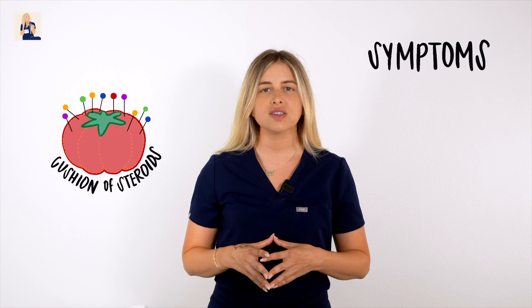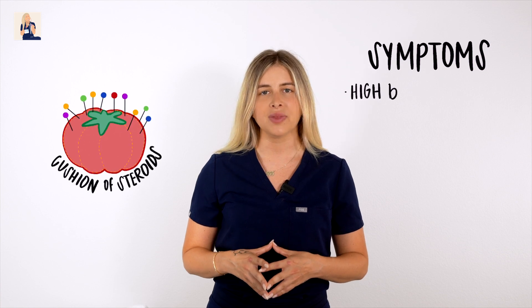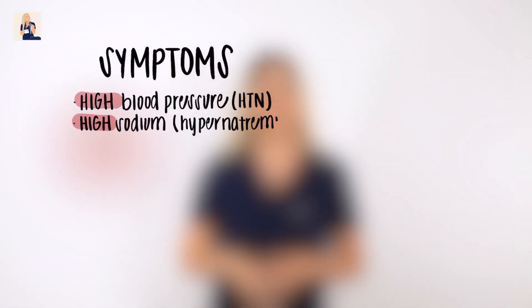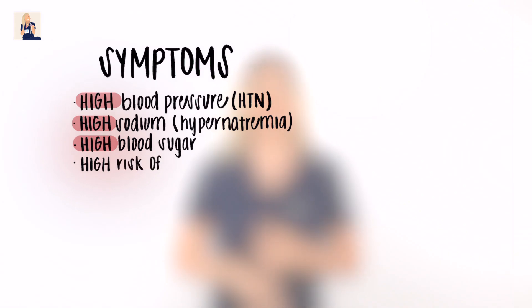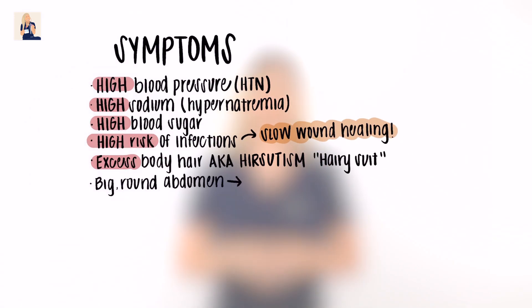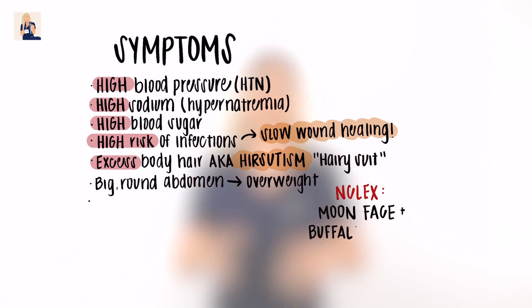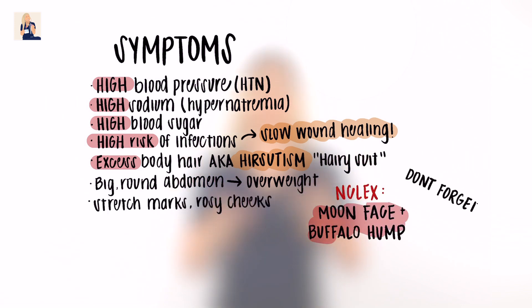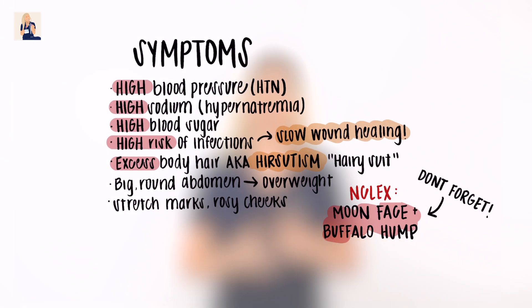Just by knowing the function of the adrenal gland, we can pretty much list all of our signs and symptoms of Cushing syndrome: high blood pressure, high sodium, high blood sugar, high risk of infections, excess body hair, big round abdomen, overweight, moon face, buffalo hump, stretch marks, and rosy cheeks. To remember all of these symptoms, don't forget to picture Cushy Connor.